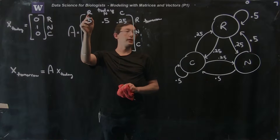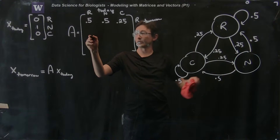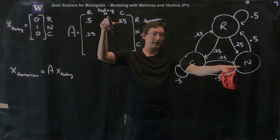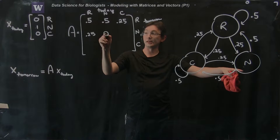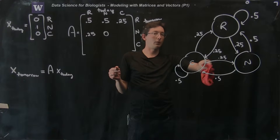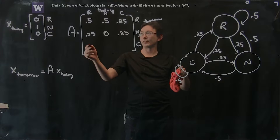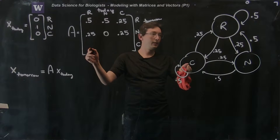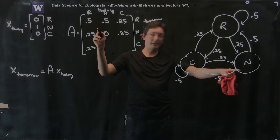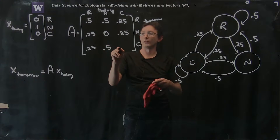If it was rainy today, the chance of being nice tomorrow is 25%, so 0.25. If it was nice today, the chance of being nice tomorrow is 0%. And if it was cloudy today, there's a quarter chance of it being nice tomorrow, 0.25. Then the last row: rainy today, cloudy tomorrow is 0.25; nice today, cloudy tomorrow is 0.5; cloudy today, cloudy tomorrow is 0.5.